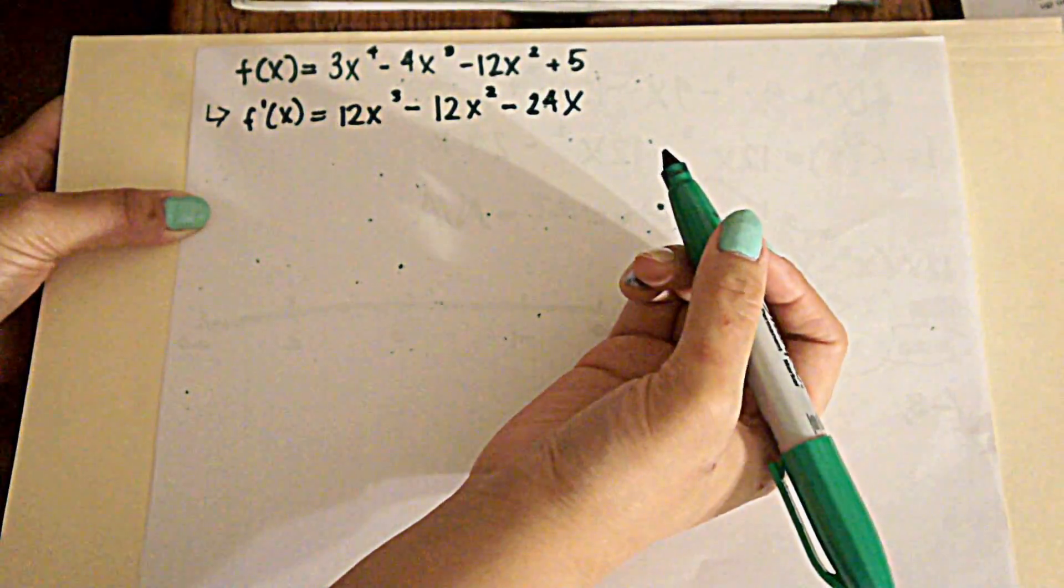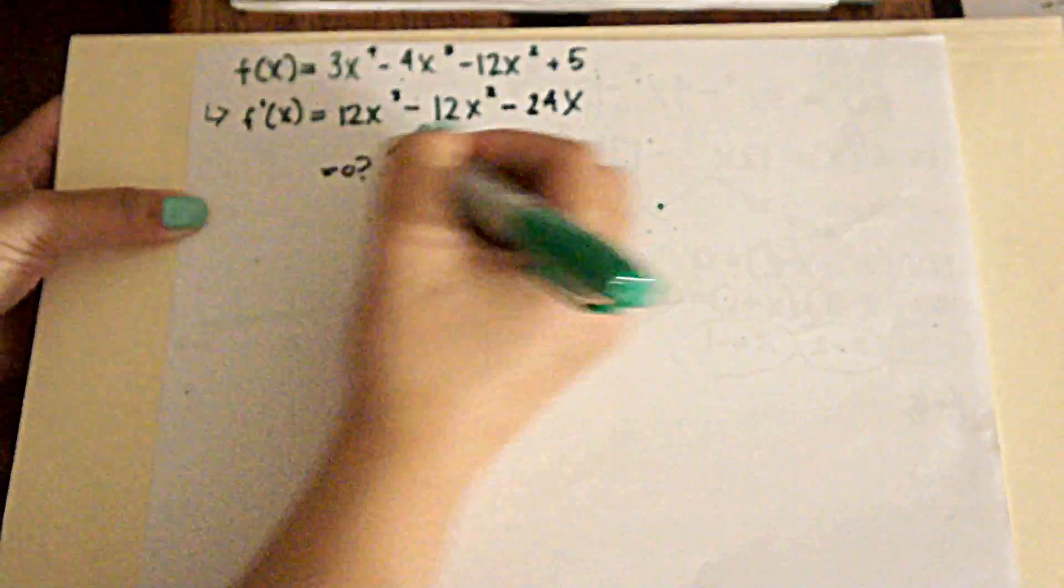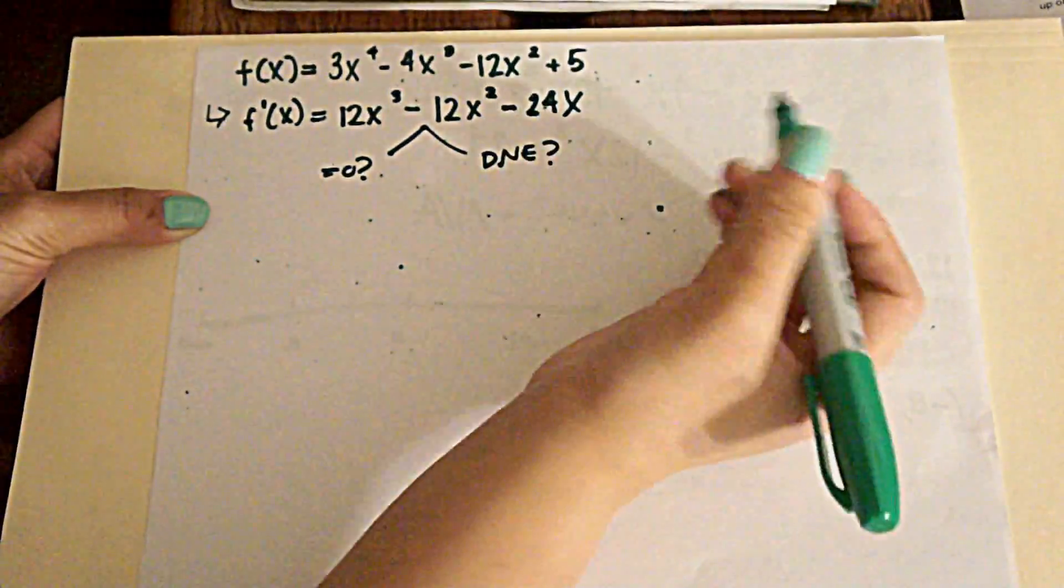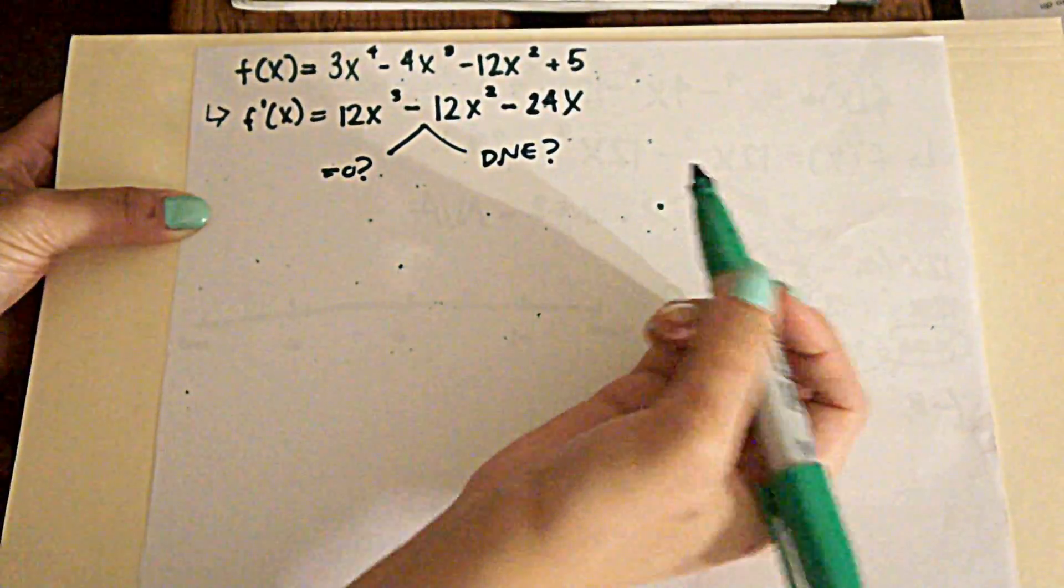And the first thing we want to do is see if we can set it equal to 0 or if anything does not exist. And since it is polynomial, we don't have to worry about running into any problems.